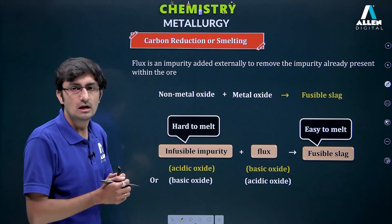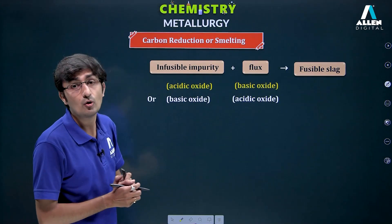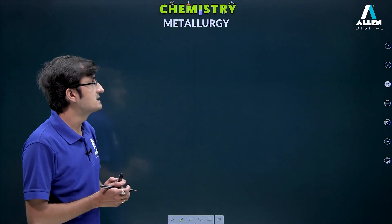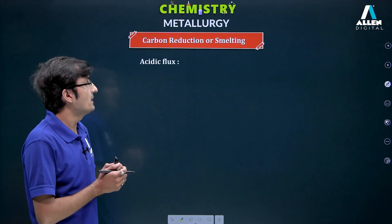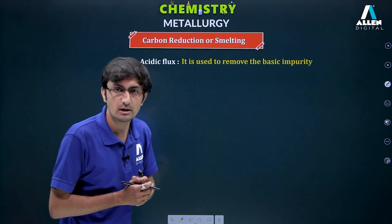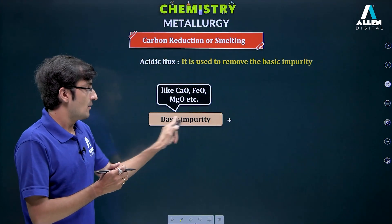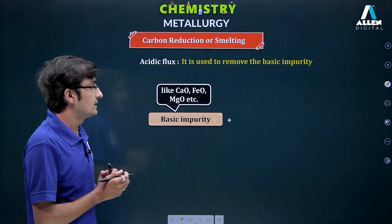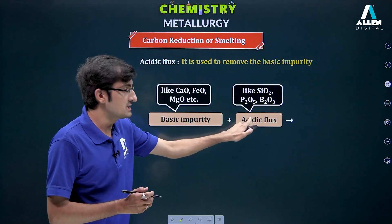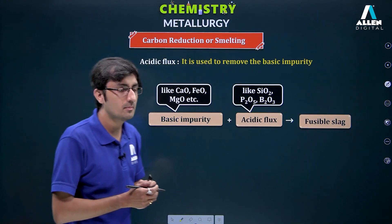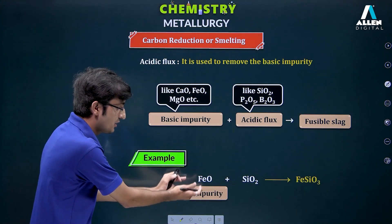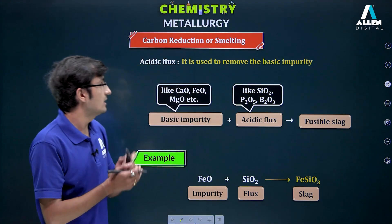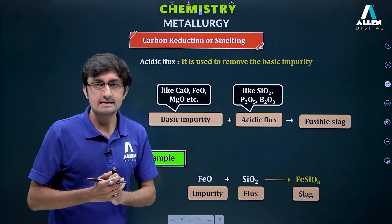Flux is basically of two types: acidic flux and basic flux. Acidic flux is used to remove basic impurity. If basic impurity (metal oxide, which is basic in nature) is present, we add a non-metal oxide (acidic flux) to react with it and form fusible slag. For example, if impurity is FeO, we add a non-metal oxide as flux, and slag is formed.